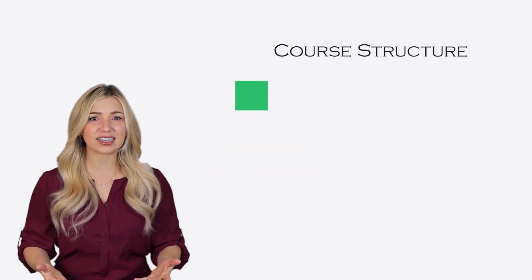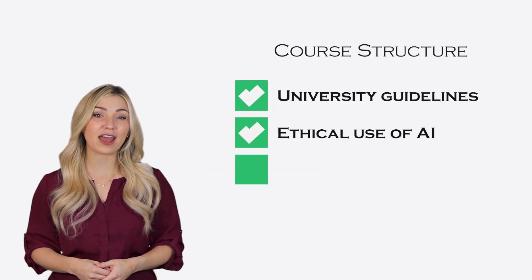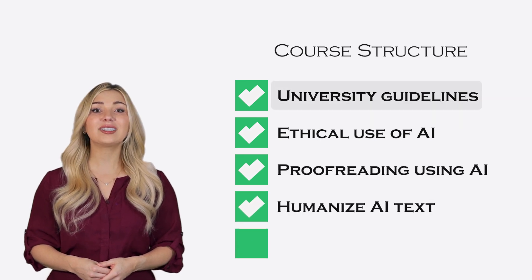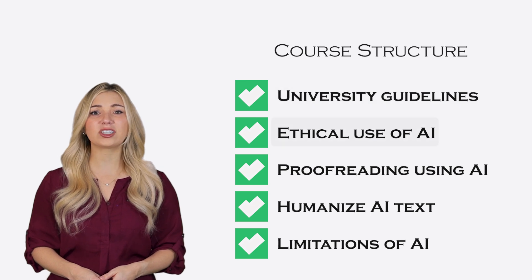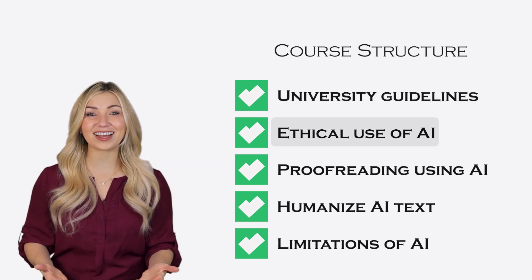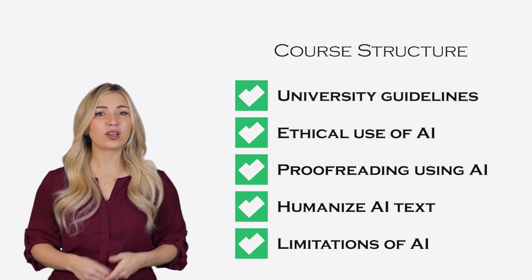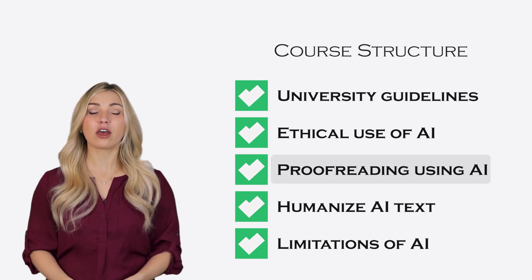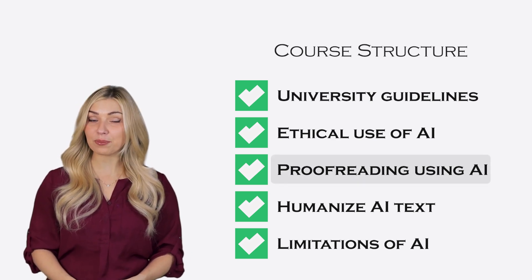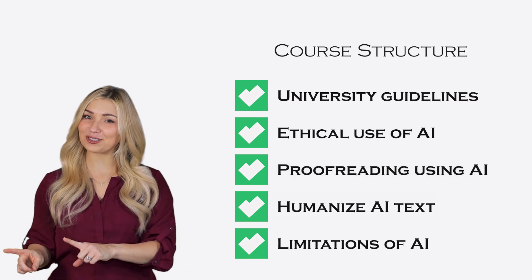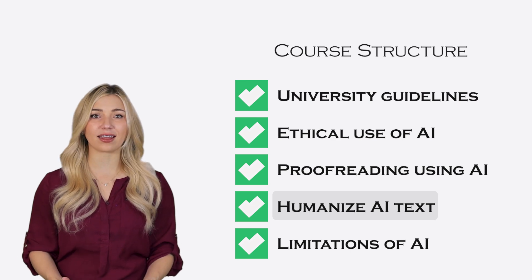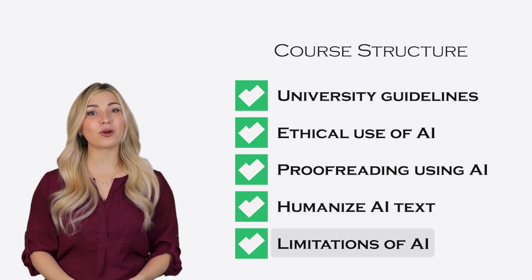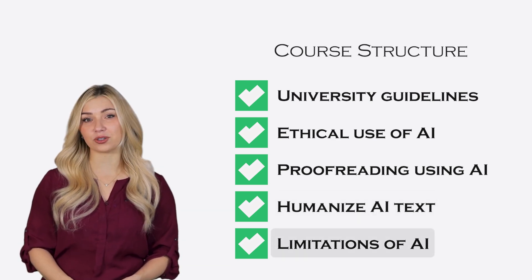This is a huge topic, and there is so much to discuss. To make it easier, we've divided the course into five chapters. First, we'll discuss the current university guidelines for using AI. Next, we'll talk about how to use AI ethically for research. Then, we'll show you the best practices for using ChatGPT as a proofreading tool. After that, you'll learn how to humanize AI-generated text so that it feels less robotic. And finally, we'll explore the limitations of AI tools.